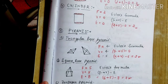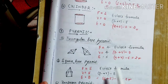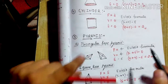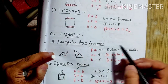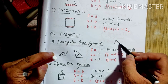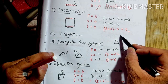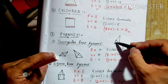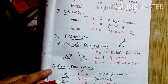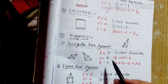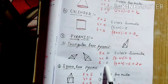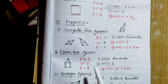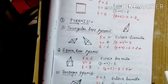The next figure is the pyramid. Let us start with the triangular-based pyramid. The number of faces in a triangular-based pyramid is 4, vertices 4, edges 4 — Euler's formula verified. Next is the square-based pyramid: faces 5, vertices 5, edges 8 — Euler's formula verified.